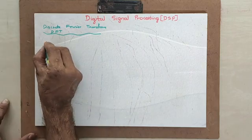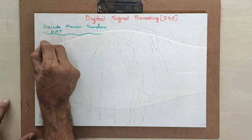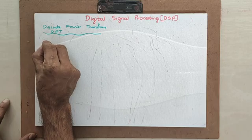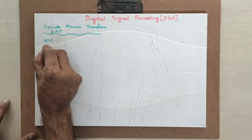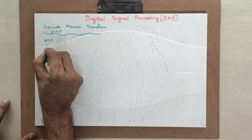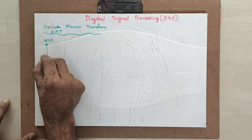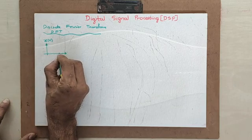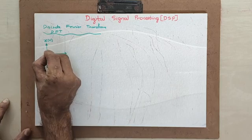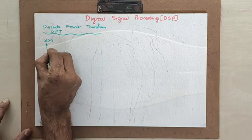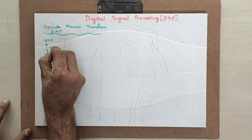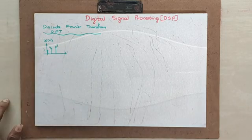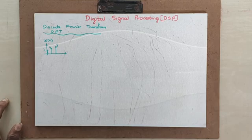Let us consider a discrete finite signal X of n. X of n is discrete and finite. For example, it is simply 1, 2, and 3. Let us consider this as our discrete time domain signal.